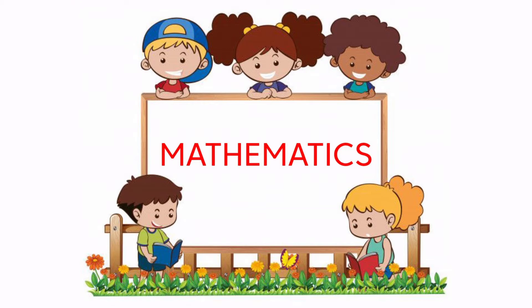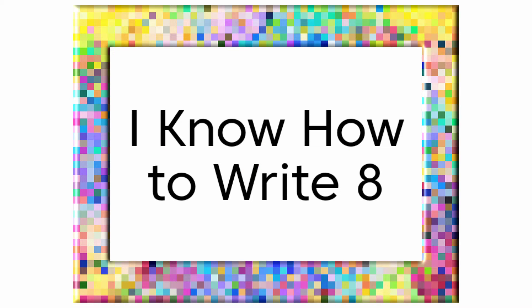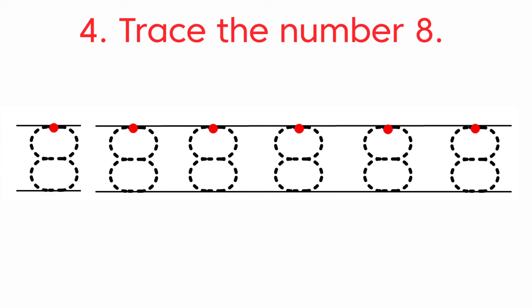Hi children, today in mathematics we are going to learn how to write 8. Look at the fourth one — trace the number 8 starting from the red dot. We are going to draw a forward curve and down, then a backward curve from down, and again a forward curve facing up, then a backward curve. This is how we write number 8.